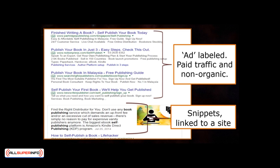For example, if you look up in the Google browser how to publish your own book, or simply 'publish your book,' you'll see up to 10 search results on the first page. As you can see, the first four results have an ad label beside their link. These are paid traffic ads, or simply non-organic results. Further down, as mentioned before, you may even see snippets linked to a site.